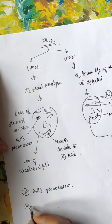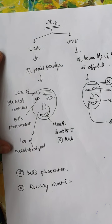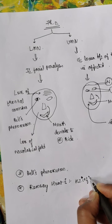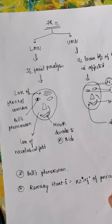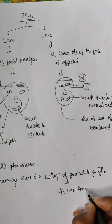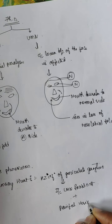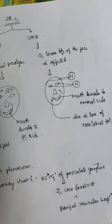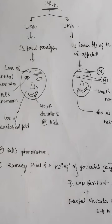One more important term is Ramsay-Hunt syndrome. It is a syndrome in which the facial nerve is affected due to Herpes Zoster infection of the geniculate ganglion. This leads to ipsilateral LMN-type facial nerve palsy, plus painful vesicular eruptions on the external auditory meatus.